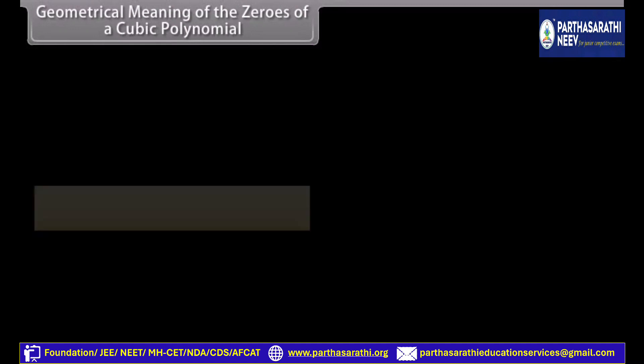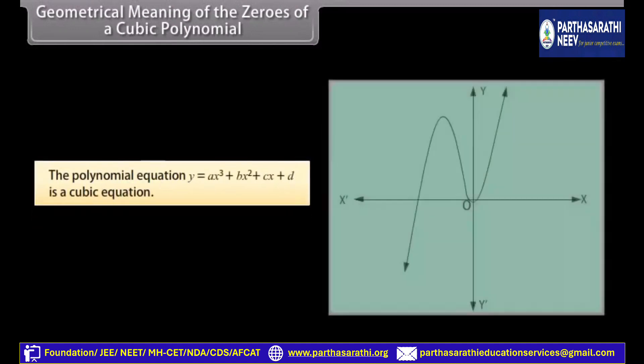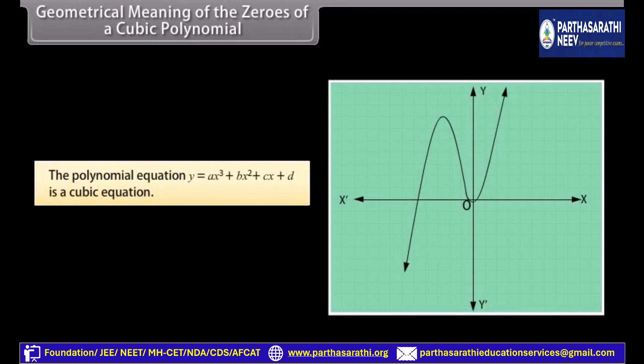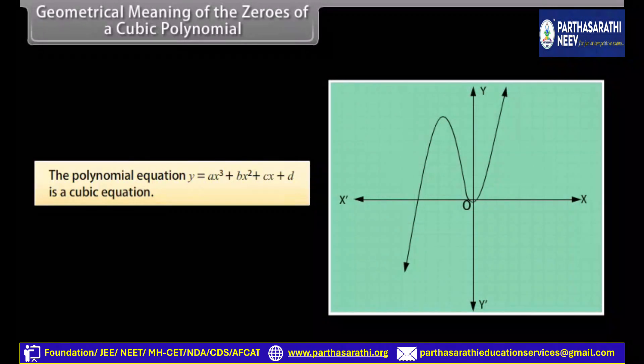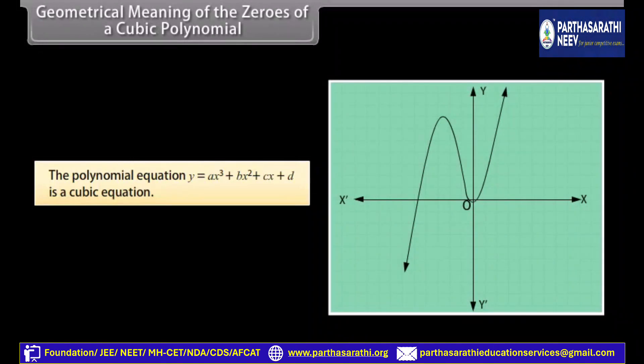Geometrical meaning of the zeros of a cubic polynomial: The polynomial equation y equals ax cubed plus bx squared plus cx plus d is a cubic equation. This is the shape of the graph for a cubic polynomial.